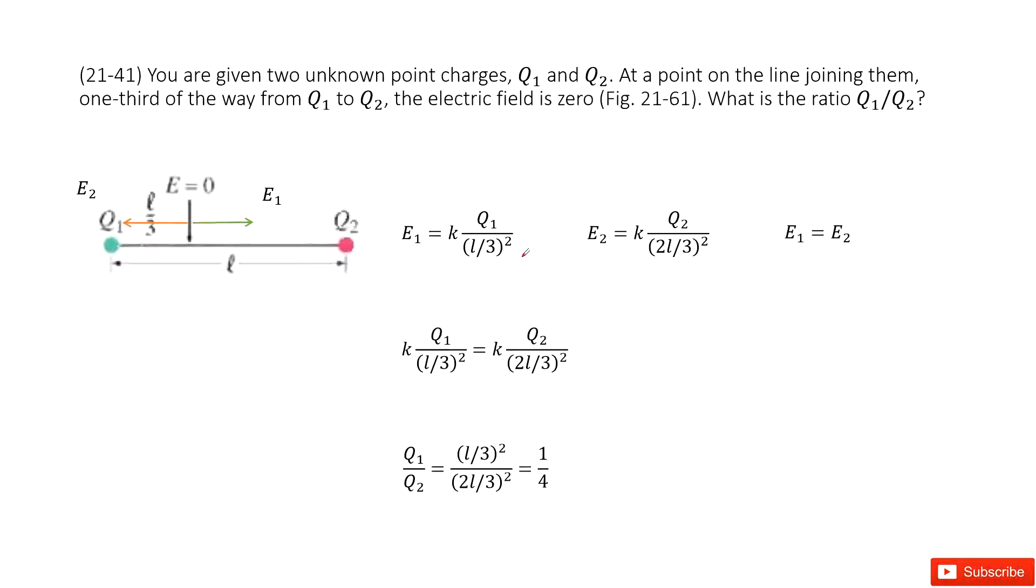Chapter 21 is about electric field and electric charge. In this system, we have two point charges, q1 and q2, and they are positive charges. We see at one point there...